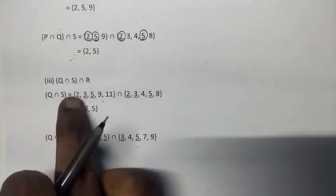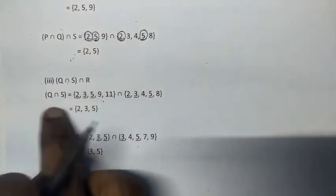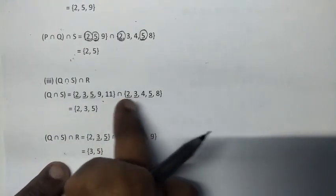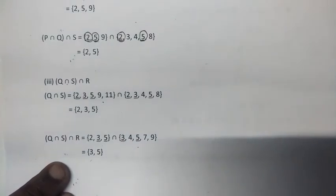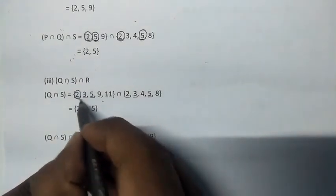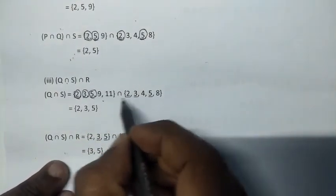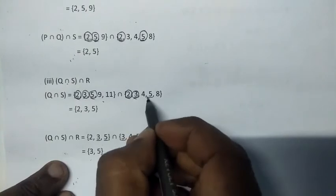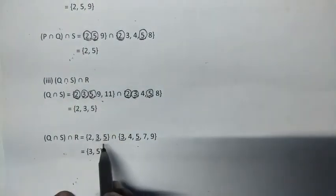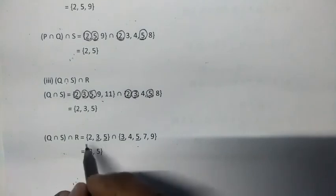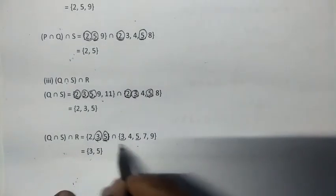Third one: Q intersection S intersection R. Q intersection S: Q has 2, 3, 5, 9, 11. S has 2, 3, 4, 5, 8. Common elements are 2, 3, 5. Now intersection with R gives us 3 and 5. Answer: {3, 5}.